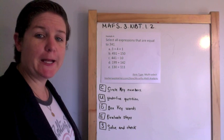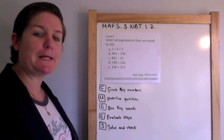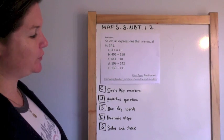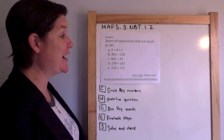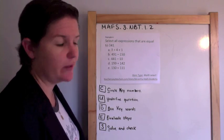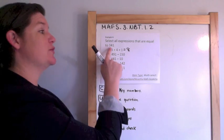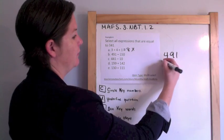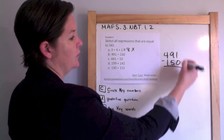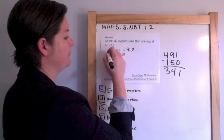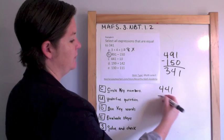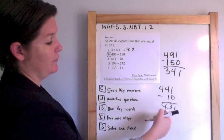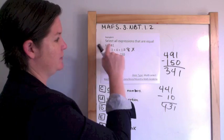Example 4. Select all expressions that are equal to 341. Well, this is a multi-select, so that means there's probably going to be more than one right answer. 3 plus 4 plus 1 equals 8. Don't get confused, because you think you're doing 3 plus 4 plus 1. You're not. That is wrong. 491 minus 150 equals 341. That's right. 441 minus 10 equals 431. Careful! Not the same numbers. 4 in the hundreds place, 3 in the hundreds place. They're not the same.